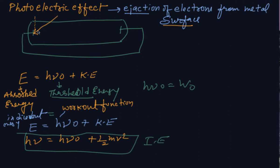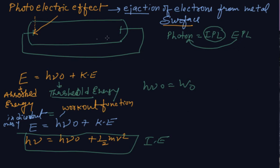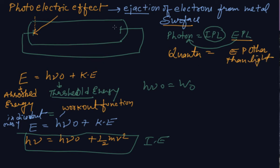The energy packet in the form of a photon — you have learned this. A trick: think of IPL, the energy packet thrown on the metal. A packet of energy in the form of light is called a photon. Energy packets other than light are called quanta.